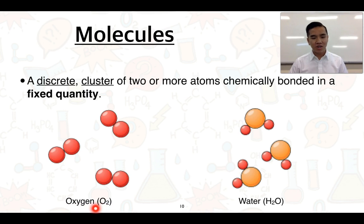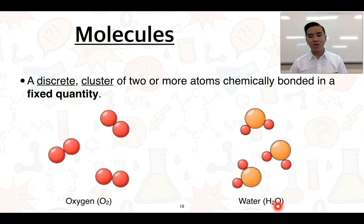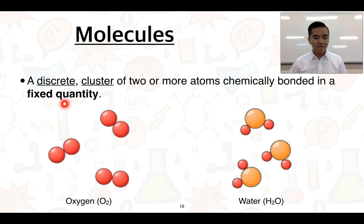The first example is oxygen, O2, which consists of two oxygen atoms chemically bonded together. Each oxygen molecule is separate to one another, so it's discrete, and they all contain two oxygen atoms. We can also look at compounds — we would all be familiar with water, H2O. We can see that we've got two small hydrogen atoms bonded to one larger oxygen atom, forming a particular shape. Any water molecule looks the same and contains the same number and type of atoms, which helps explain that fixed quantity.